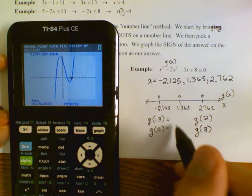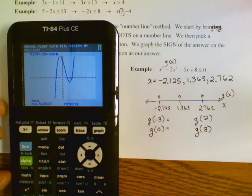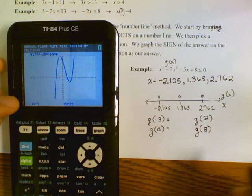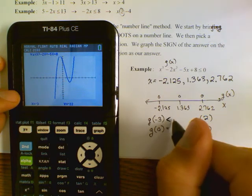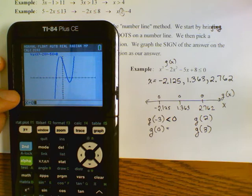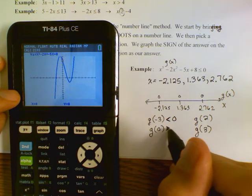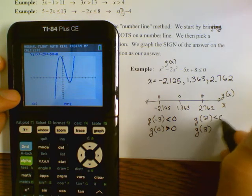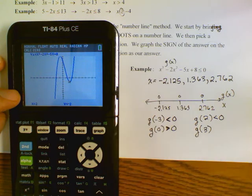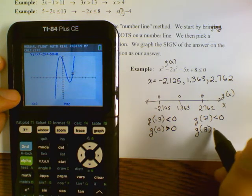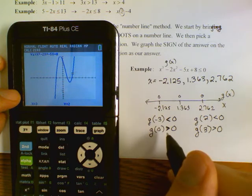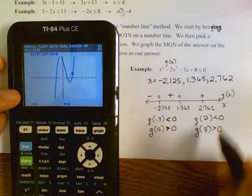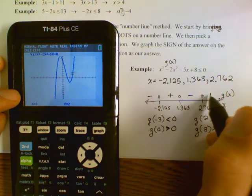Using the calculator: g(−3) equals negative 22, which is less than zero. g(0) equals 8, which is greater than zero. g(2) equals negative 2, which is less than zero. g(3) equals 2, which is greater than zero. So the sign pattern on the number line goes minus, plus, minus, plus.